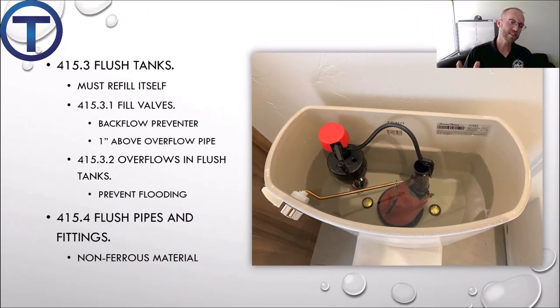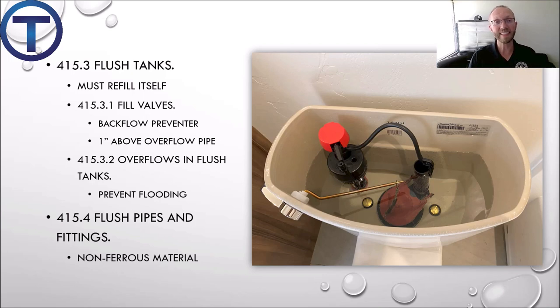4.15.4 says that flush pipes and fittings have to be non-ferrous material — that means not steel. That can be copper, brass, or most of the time plastic.